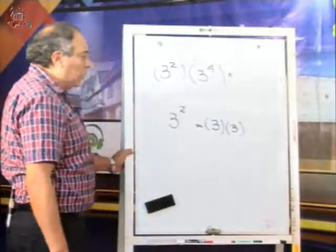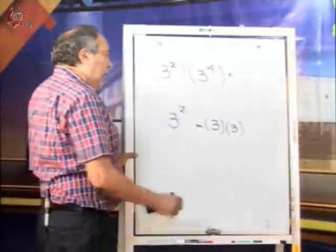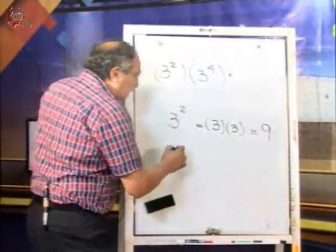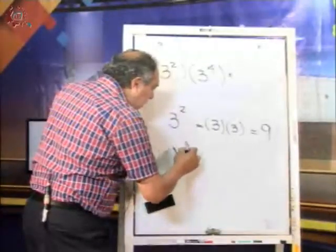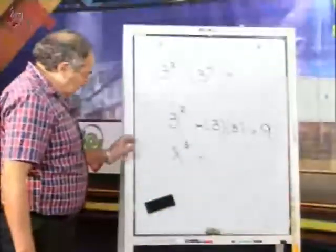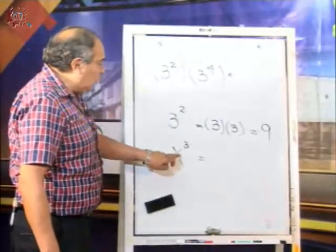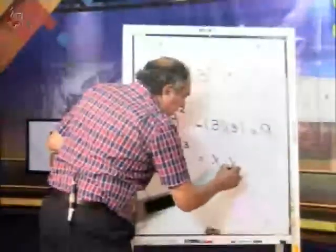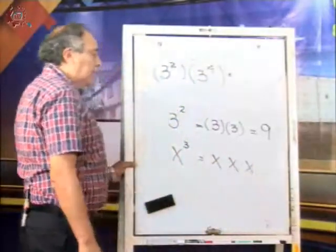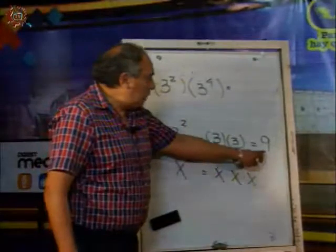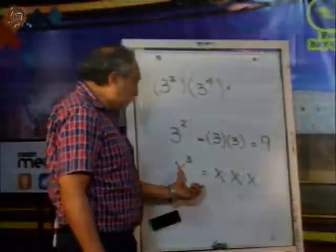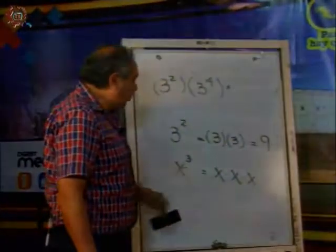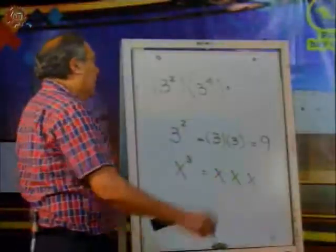El exponente le habla a la base y le dice: debes de multiplicarte por ti mismo dos veces. El resultado sería 3 por 3 = 9. Pero cuando la base es una letra, de la misma manera, el 3 coloquialmente le habla a la X y le dice: multiplícate por ti misma tres veces. En este caso no hay un número como resultado — es más bien el concepto de multiplicación de la base tantas veces como indica el exponente.